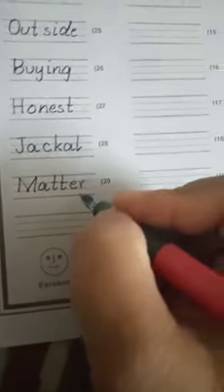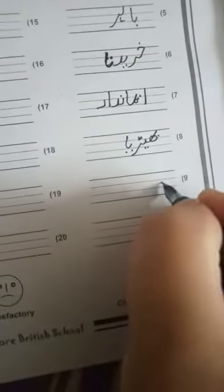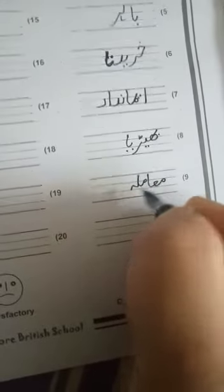Next word is matter. M-A-T-T-E-R, matter. Matter means muamla. Mim, alif, mim, lam, muamla.